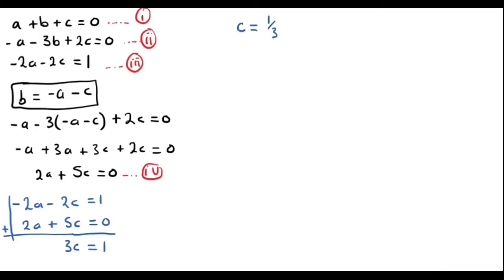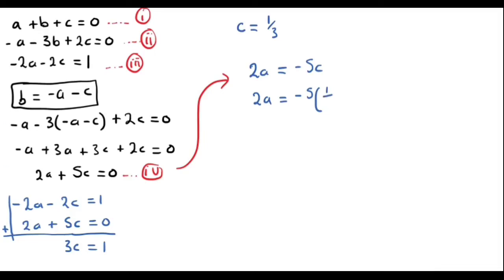Since we have C, we can find A by using equation 4: 2A = -5C. Substituting C = 1/3 gives 2A = -5/3. Dividing both sides by 2 gives A = -5/6.